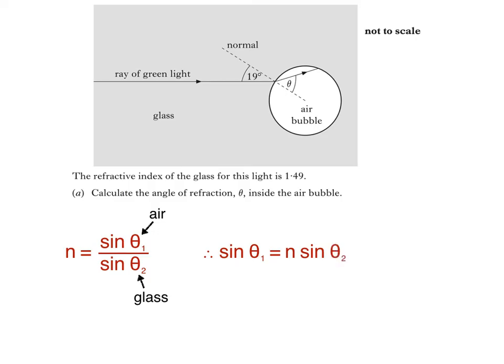If we substitute our values of refractive index and angle in glass, we get 1.49 times sine 19, which is equal to 0.485. Remember that this is the sine of the angle in air. So angle theta 1 is equal to sine to the minus 1, 0.485, which is 29 degrees.